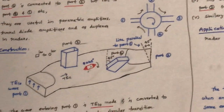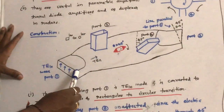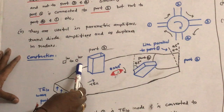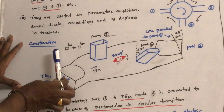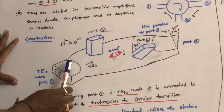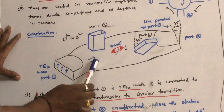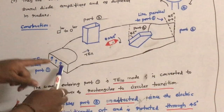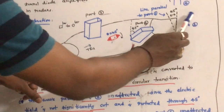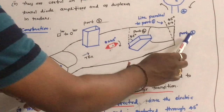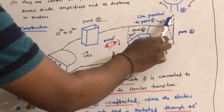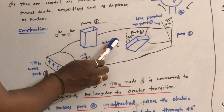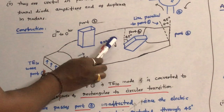Now let us see the construction of the circulator. The rectangular waveguide is converted into a circular waveguide, shown as rectangular to circular waveguide transition. The TE₁₀ mode, which is vertically polarized, is given as input and is converted into TE₁₁ dominant mode because of this rectangular to circular transition. Port 2 is 45 degrees twisted with respect to port 1. This is a ferrite rod which provides Faraday rotation of 45 degrees in the clockwise direction.